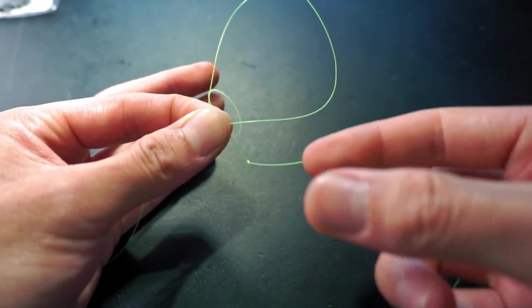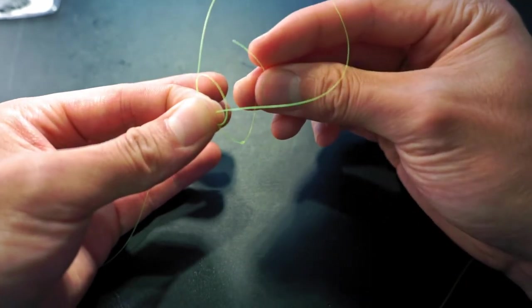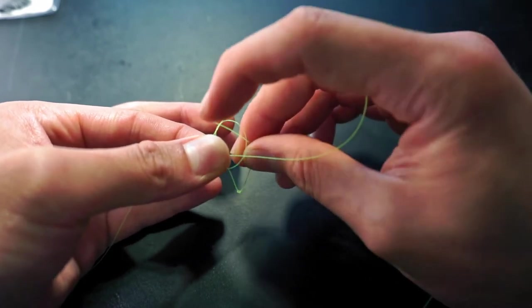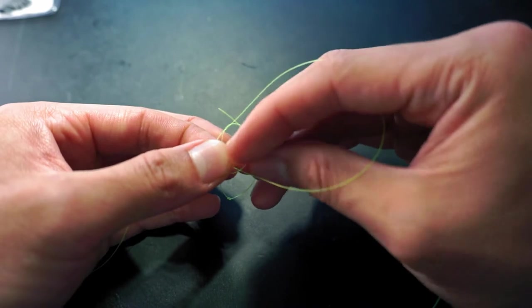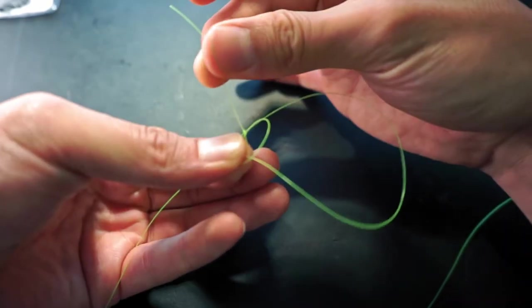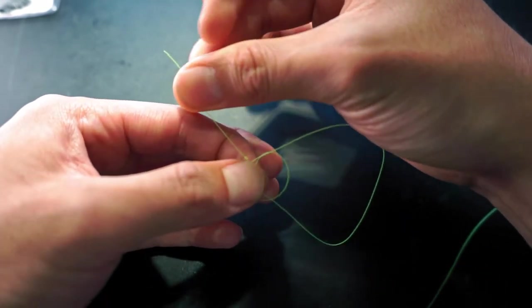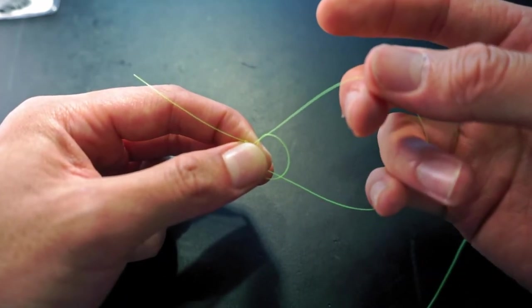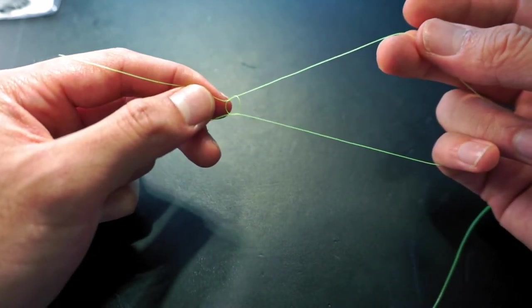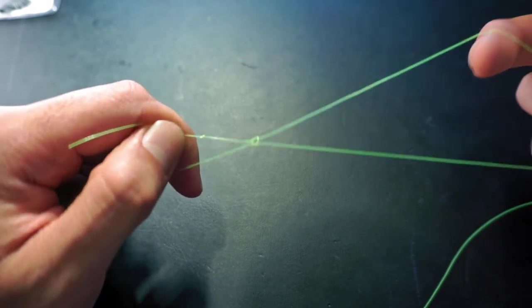Next, you're going to use the tag end and pass it through both the first big loop and the second small loop. And make sure that as you pass your working end, you want to see that your overhand knot that you tied in the beginning goes through both the second and the first loop. And then when you start to tie it down, you're going to see a basic slip knot.